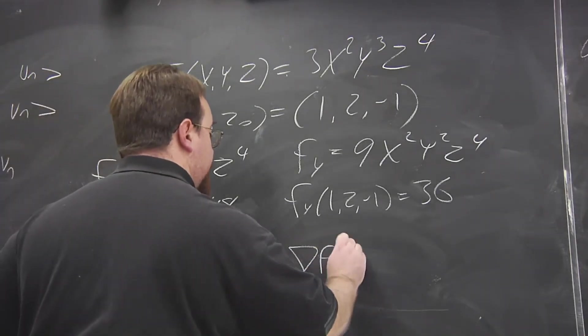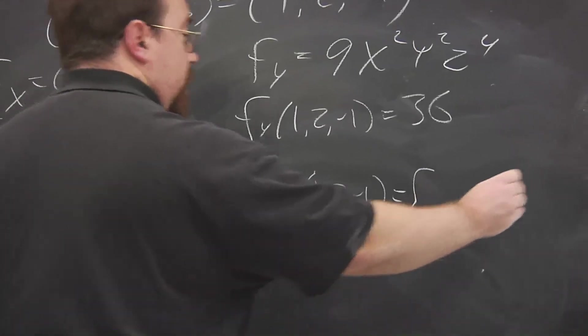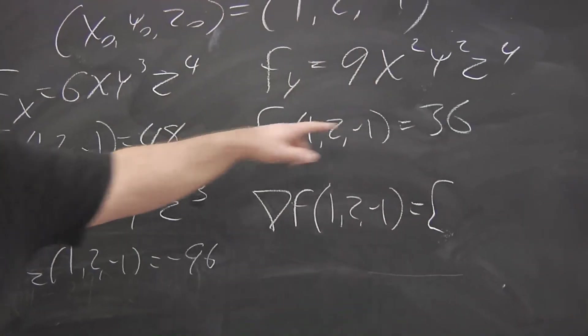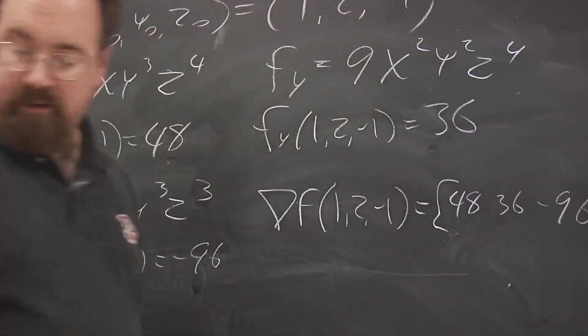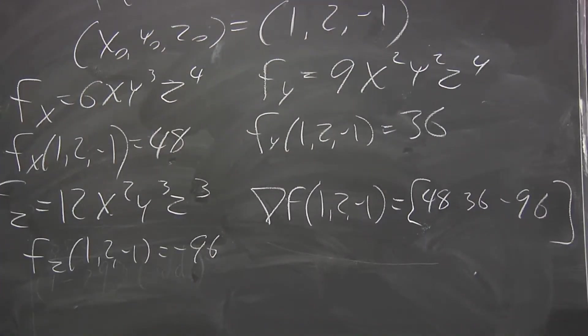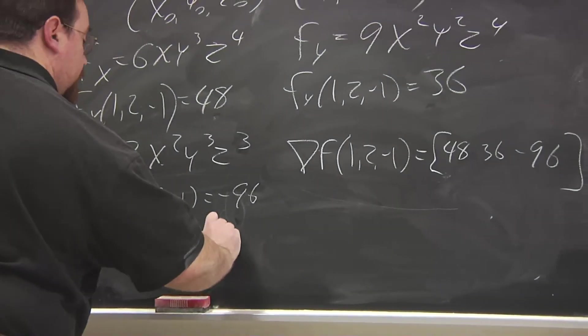So the gradient of f at this point is this row vector. We put fₓ, fᵧ, fᵤ. So it's 48, 36, -96. Now we have enough information to write down, oh, almost. We need to compute the function value at this point that is 24.